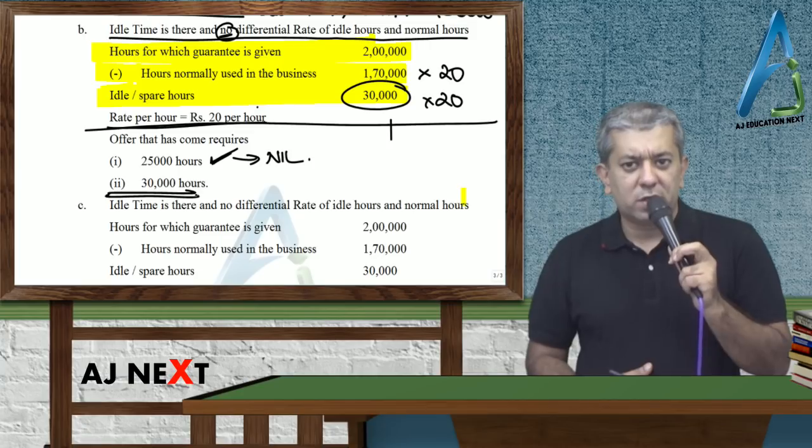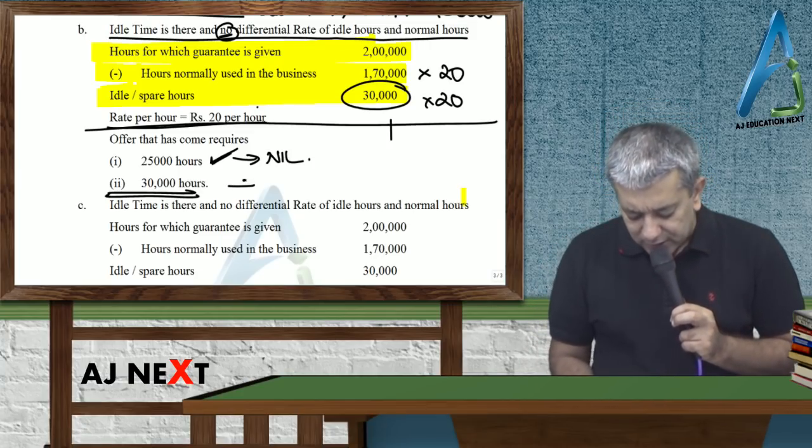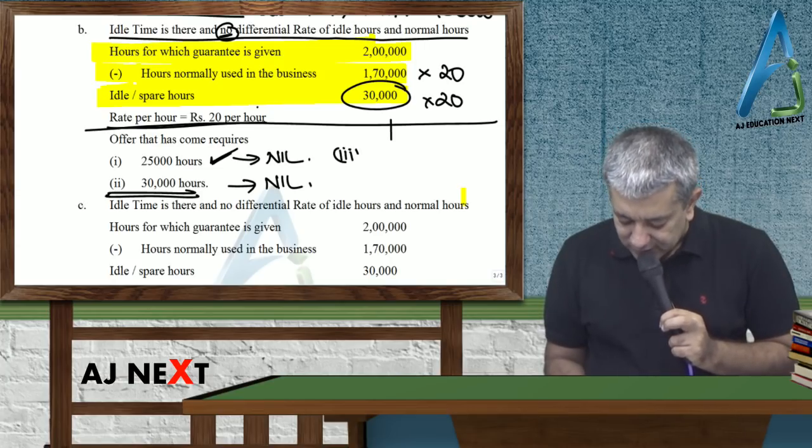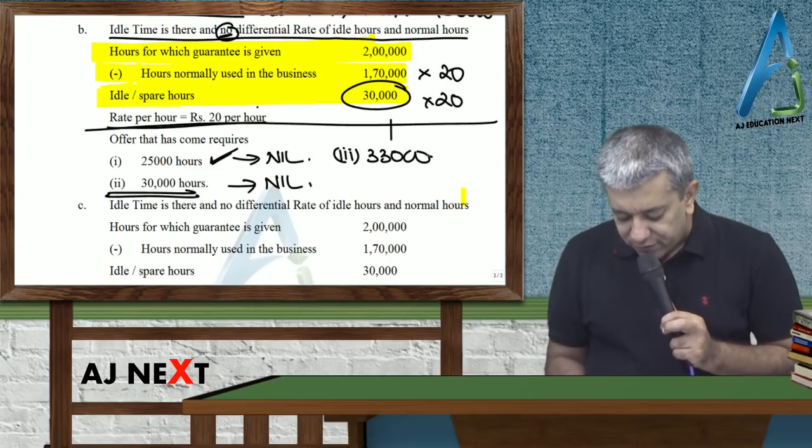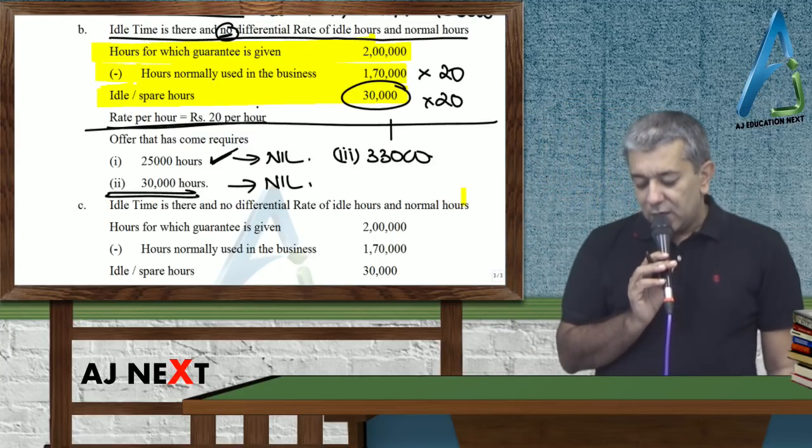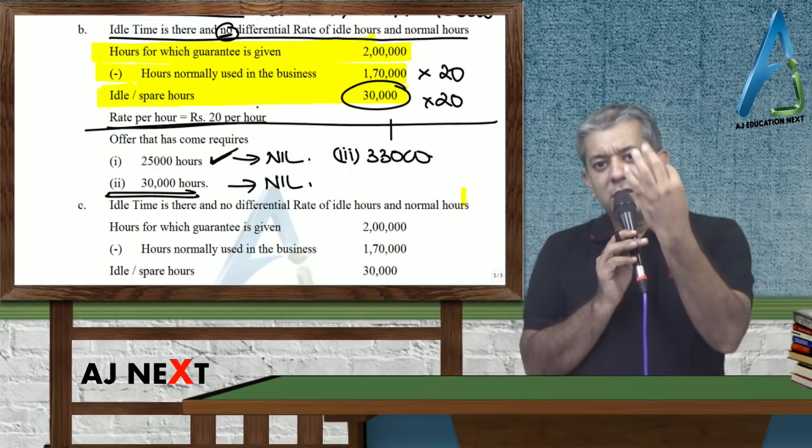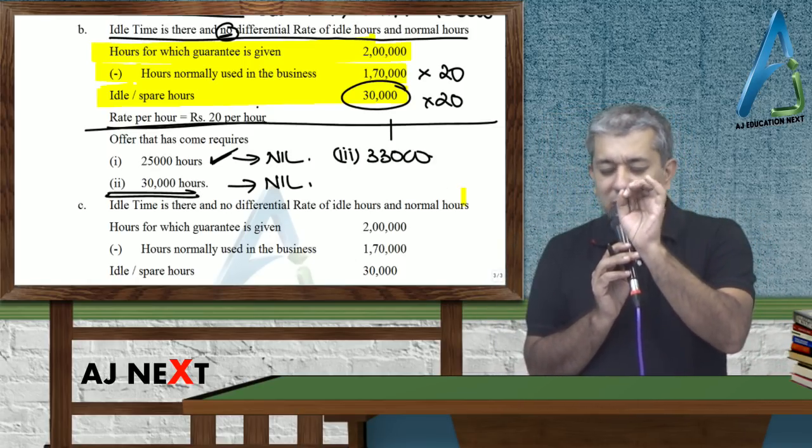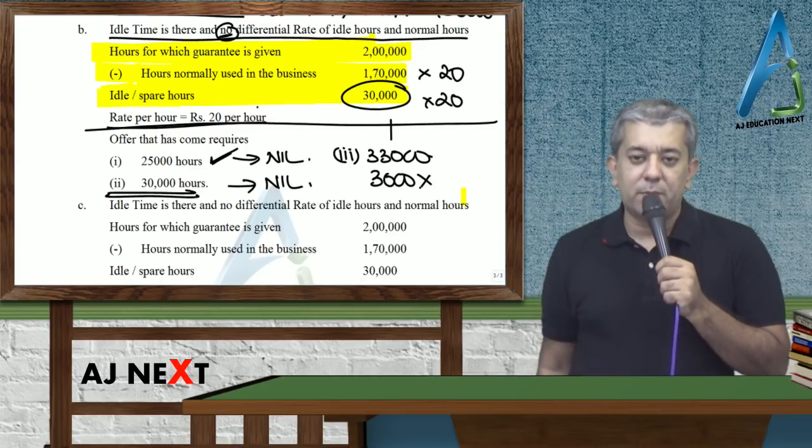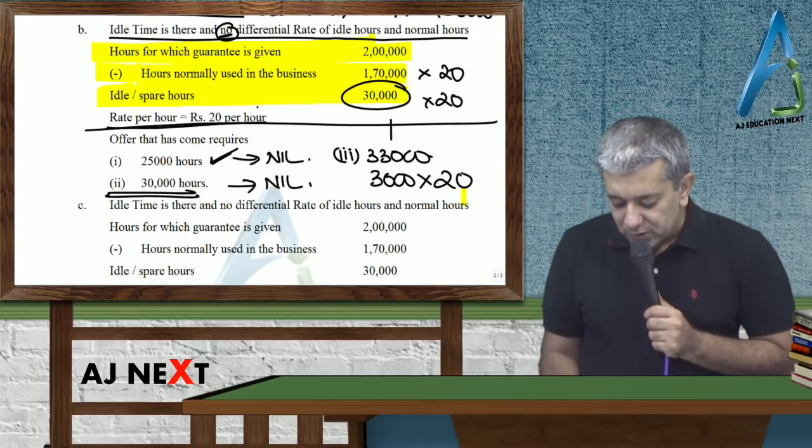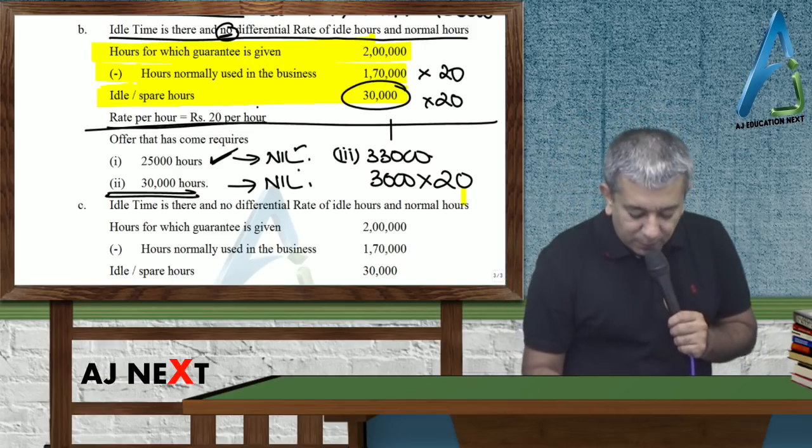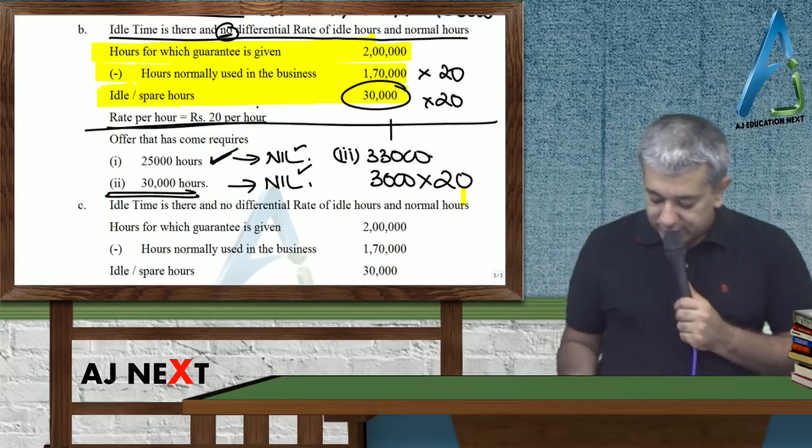Next. The offer needs 30,000 hours. Do you have 30,000 hours? Yes. So your answer will be how much? Zero. These are both stingy cases. Now I'll do the third case that I should have written here. Suppose an offer came, for which you need 33,000 hours. So if you need 33,000 hours, out of that 30,000 hours you had spare. But you will have to pay workers extra for how many hours? 3,000. 3,000 hours at the rate of 20. This will become relevant cost for you. So here nil, here nil, here nil, but here the answer will come.